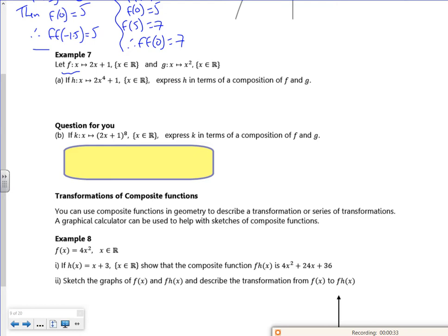h of x is 2x to the 4 plus 1. Express h of x, okay. So I've got to think what combinations of f of x and g of x will give me h of x. If you look, f of x looks like h of x but x has been replaced with x to the 4.